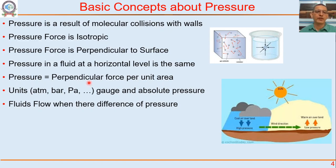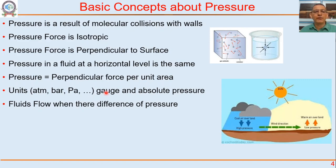Recall some units of pressure: atmosphere, bar, Pascal, mmHg, and so on. The SI unit is Pascal; 1 bar equals 10⁵ Pascal. Sometimes we write pressure in terms of 1 atmosphere absolute. We also talk about gauge pressure and absolute pressure — absolute pressure is the absolute value, while gauge pressure is absolute pressure minus 1 atmosphere.